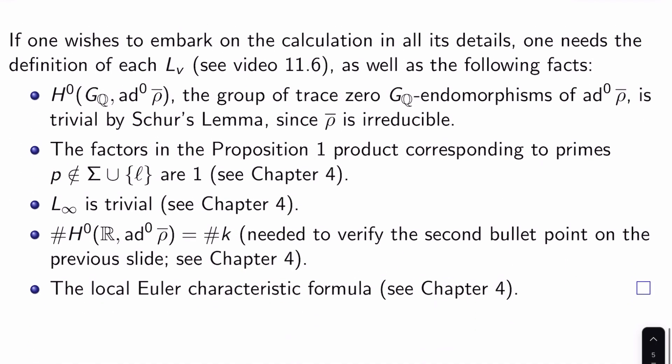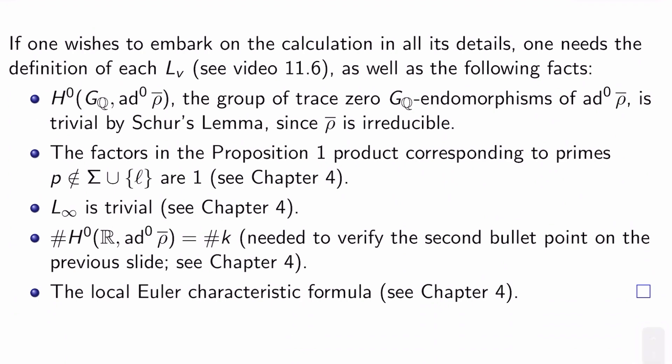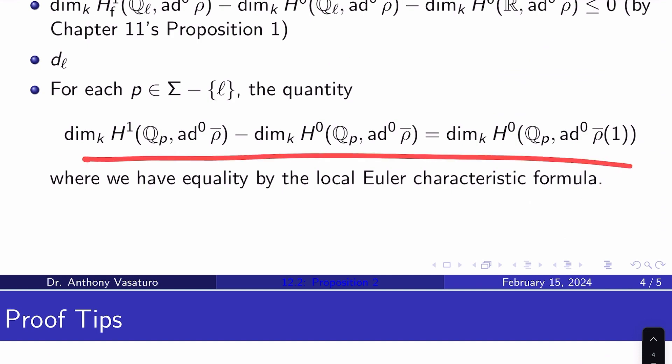And then you need to know that the cardinality of H^0(R, ad^0 ρ̄) equals the cardinality of k, which is the field we're working over. You need that to verify the second bullet point on the previous slide, and it was verified in Chapter 4. And then the last thing you need is the local Euler characteristic formula, which is proven in Chapter 4 as well. And we used that on the previous slide up here.